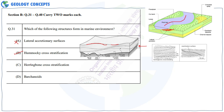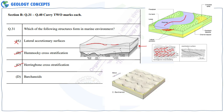Next is herringbone cross stratification. As you can see in this diagram, they form in a tidal environment. There are two directions of cross beddings representing the two directions of tidal waves, and they also form in a marine environment. This is also correct. The last option is barchanoids, and they form in an aeolian environment — you can see the wind direction and these sinus-crested dunes — so this is wrong.